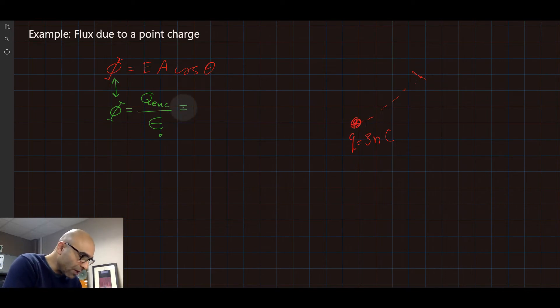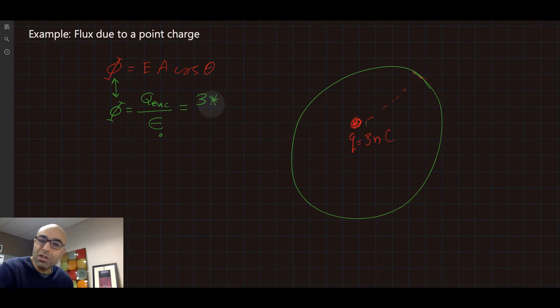So if we want to find the flux, we just actually surround this by a sphere. Then Q enclosed would be 3 nano Coulomb, so that's 3 times 10 to minus 9, that's all the enclosed charge.